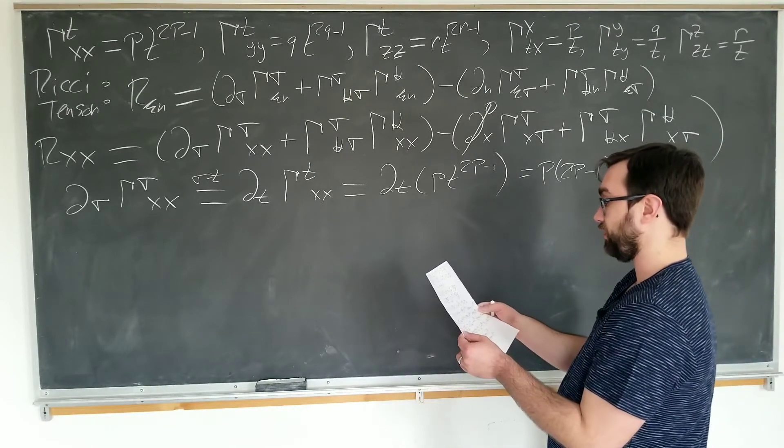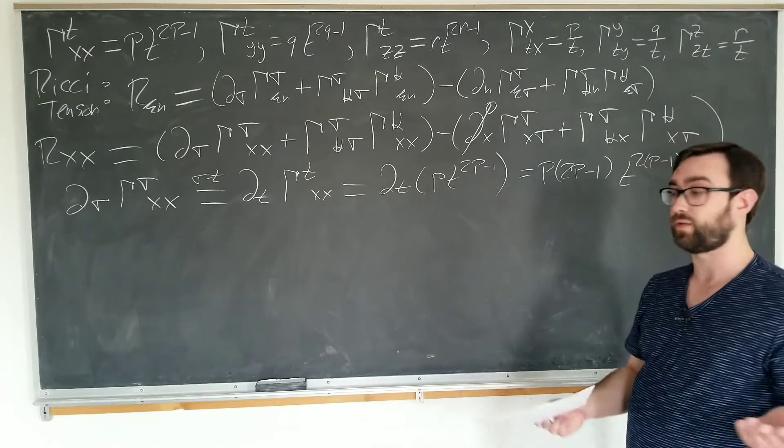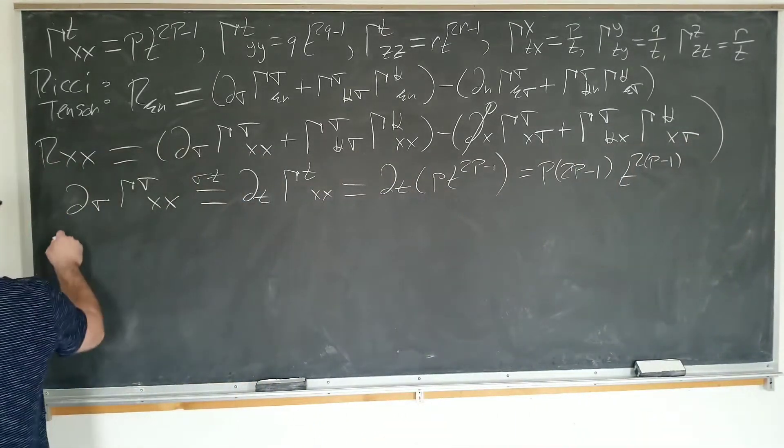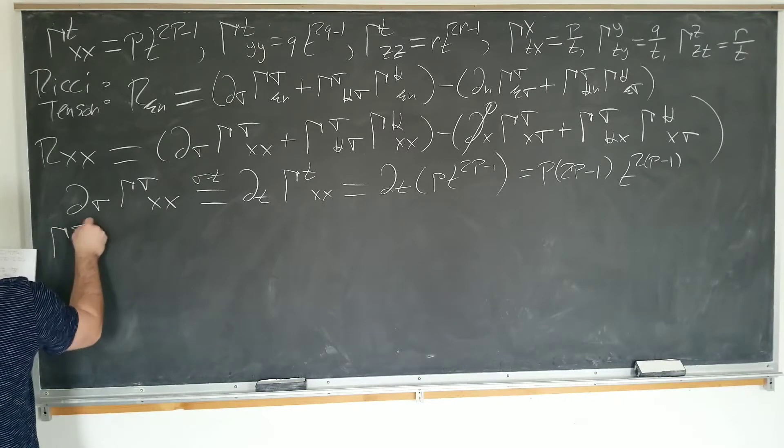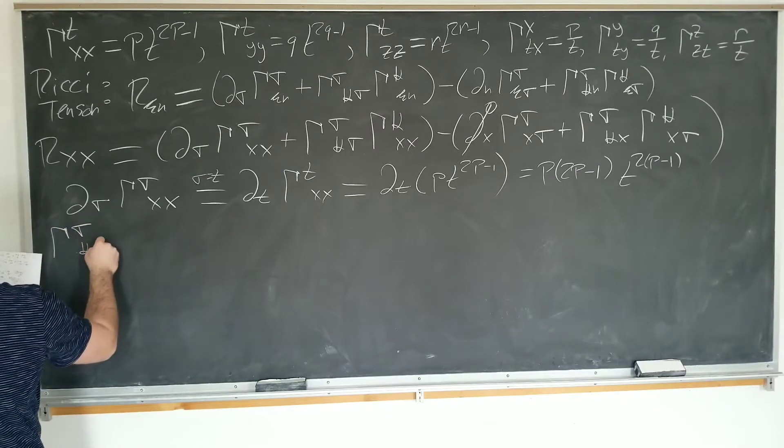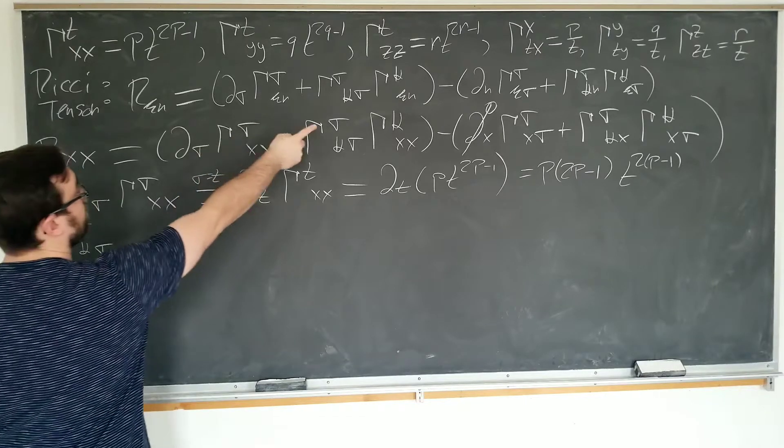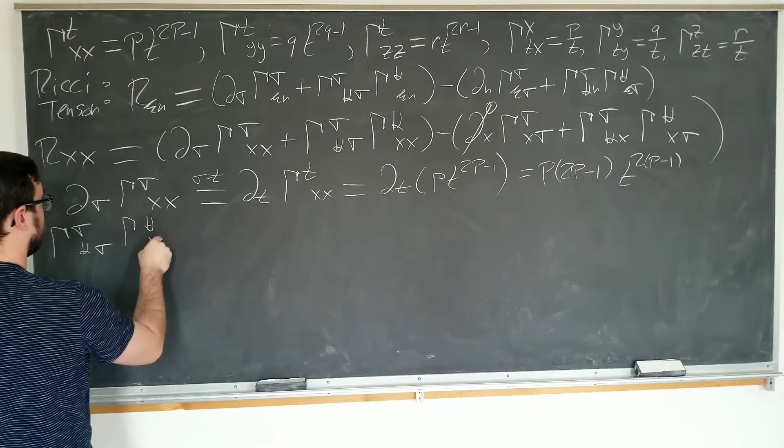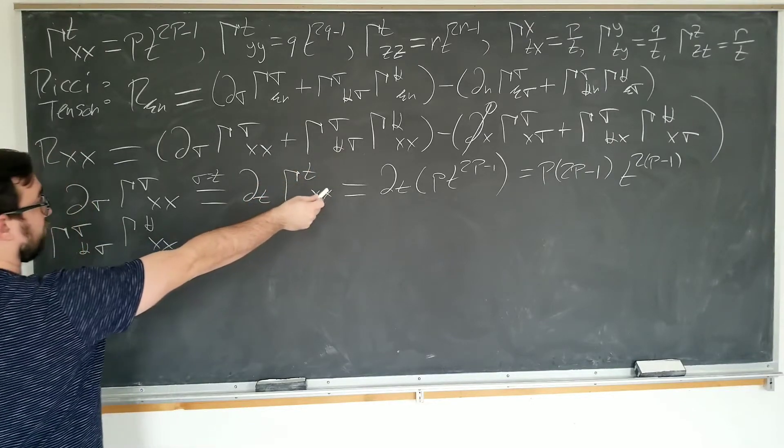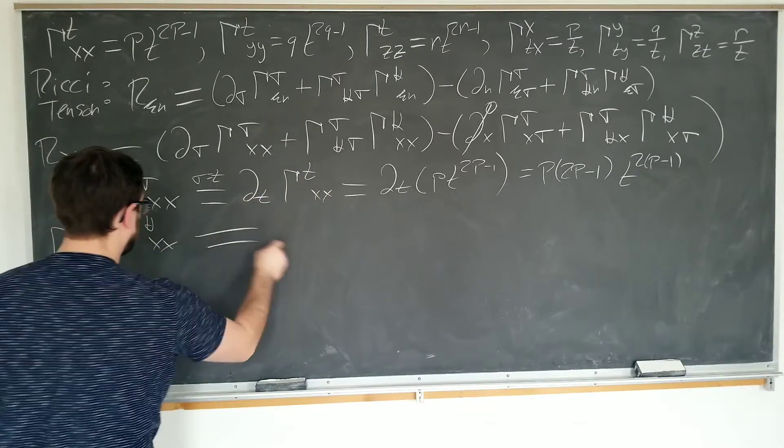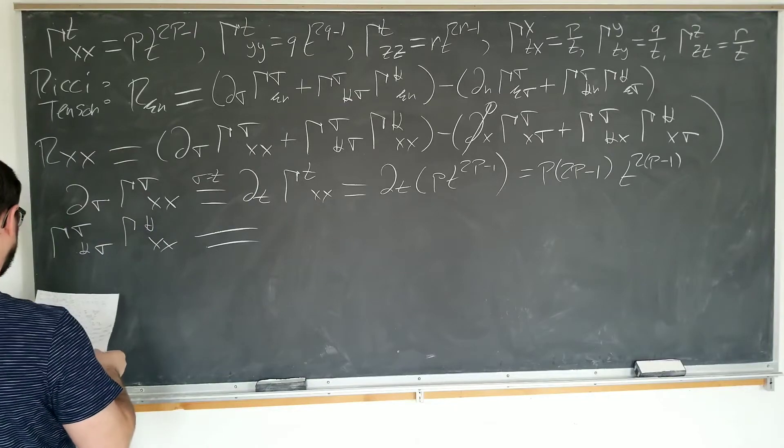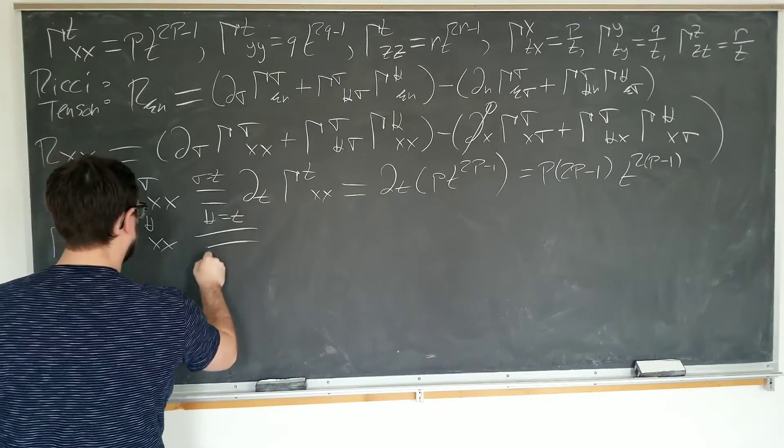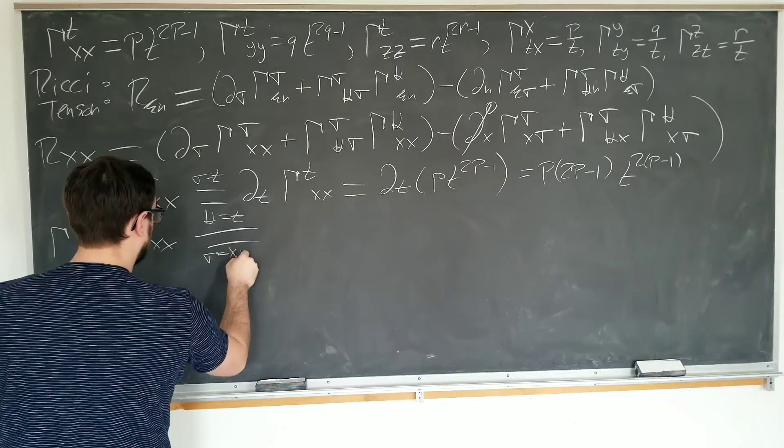First part is this one. Is anything else going to be zero just to make our lives easier? No. Unfortunately, it's not going to be zero. We have to calculate more of these stupid things. Okay. So we have gamma of sigma kappa sigma. I'm doing this one now. Kappa xx. Right? Sigma kappa xx. Okay. This is going to be non-zero for actually kappa equal to t and sigma ranging over x, y, and z.